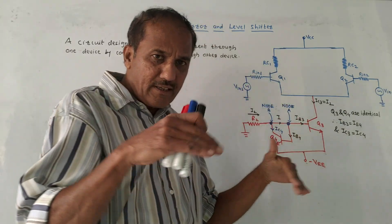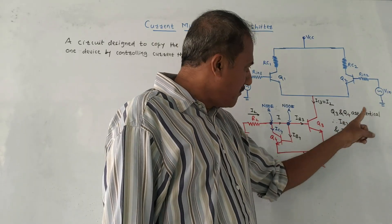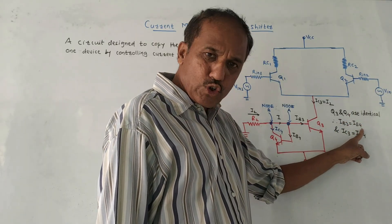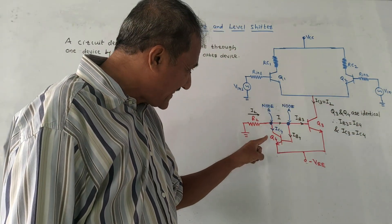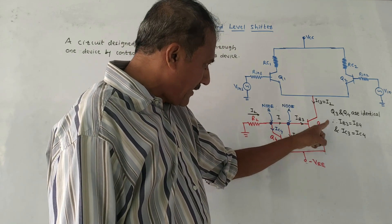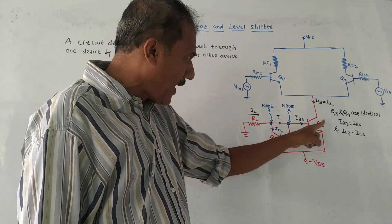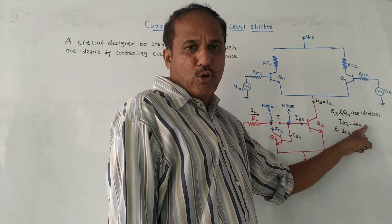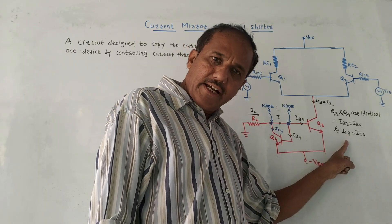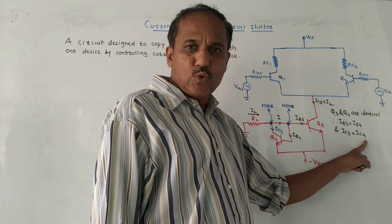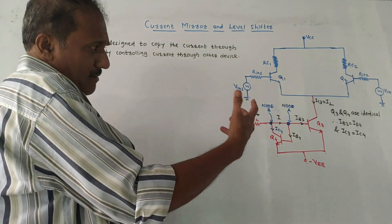Q3 and Q4 form the current mirror circuit. Q3 and Q4 are identical transistors, which means IB3 equals IB4, where IB is the base current. Since IB3 equals IB4, and since these transistors are identical, IC3 also equals IC4.